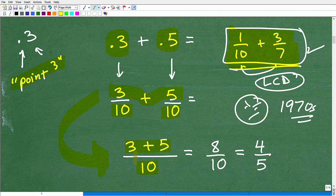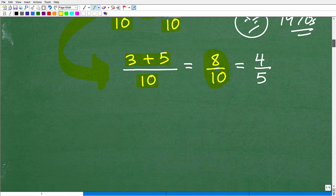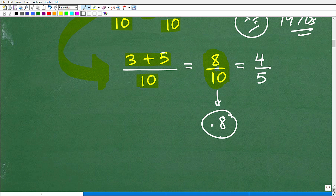All right, so 3 tenths plus 5 tenths is the same thing as 3 plus 5 now over 10. So 3 plus 5, of course, is 8 over 10. And here, 8 10, or 8 over 10, or 8 tenths, how do I write that? Well, 8 tenths, if I convert this, you should know that this is 0.8. This is 8 tenths as a decimal.